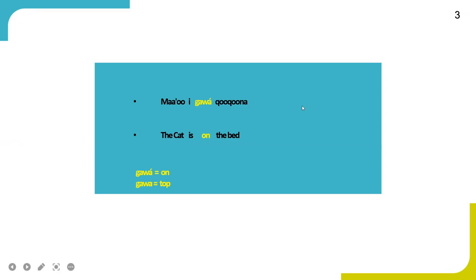Location nouns are words that describe where something is located, and they help provide more details about the location. Here, the Gorwa word is a location noun meaning 'on.' It tells us where the cat is — the location of the cat is on the bed.